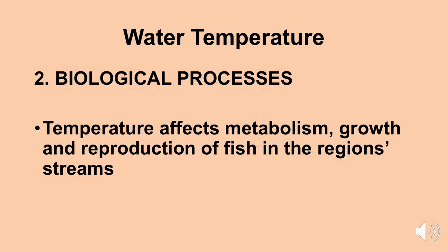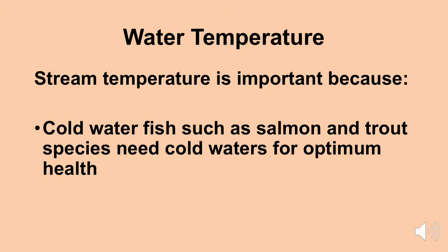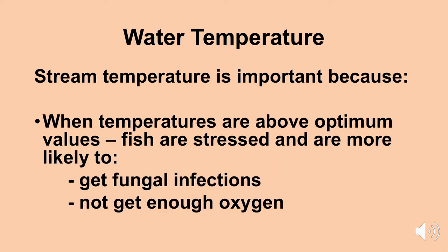Looking at biological processes, stream temperature affects the metabolism, growth, and reproduction of fish and other aquatic organisms. Cold water fish — such as salmon and trout here in the Pacific Northwest — need cold waters for optimum health. If our streams are warmer than normal, we're going to have trouble with spawning. Data has shown that when temperatures are above optimum values, fish are often stressed, more likely to get fungal infections, and less likely to get enough oxygen for optimum growth and function.